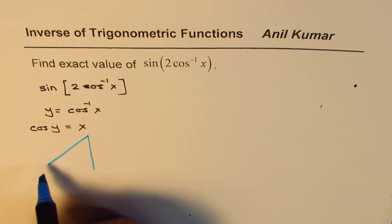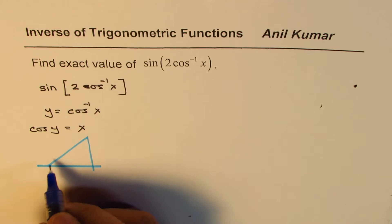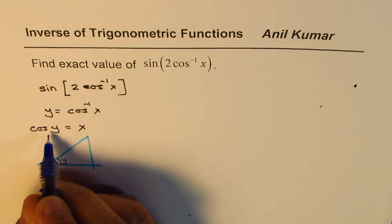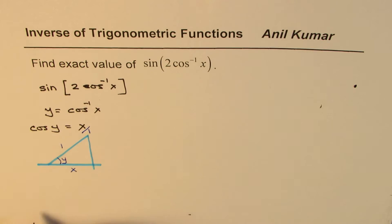Let us say something like this. In that case, if I'm saying that y is my angle, cos y is x, that means adjacent over hypotenuse is in this ratio. It could be written as x over 1.